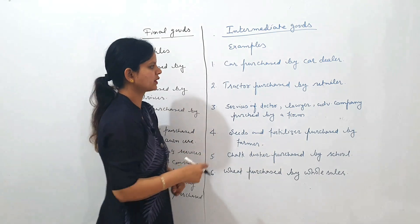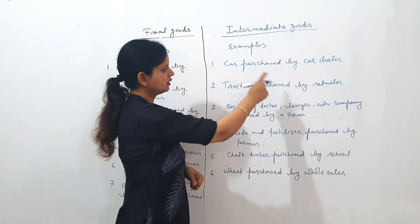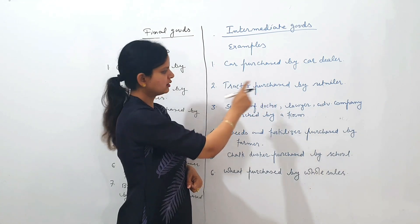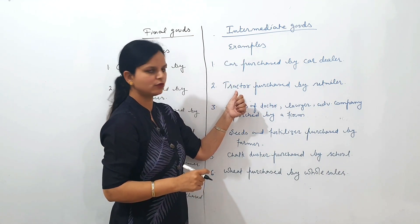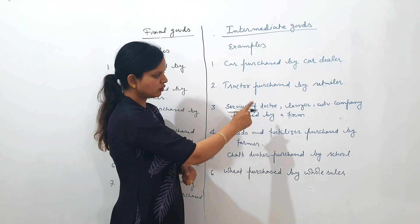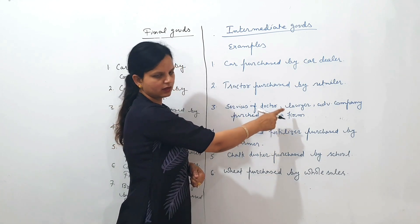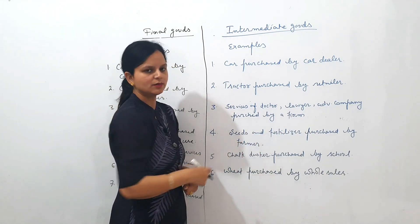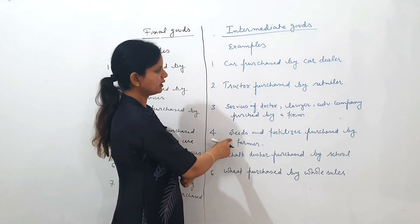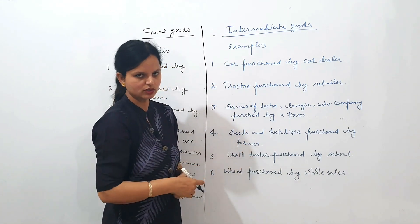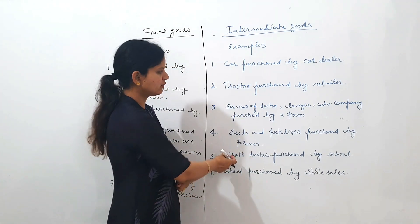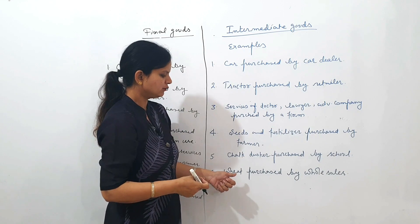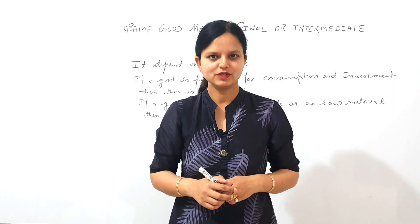Examples of intermediate goods: a car purchased by a car dealer (purchased for resale — intermediate good); a tractor purchased by a retailer (purchased for resale — intermediate good); services of a doctor, lawyer, or advertisement company purchased by a firm (intermediate); seeds and fertilizer purchased by a farmer (used as raw material — intermediate); chalk and duster purchased by a school (used as raw material — intermediate); wheat purchased by a wholesaler (purchased for resale — intermediate good).